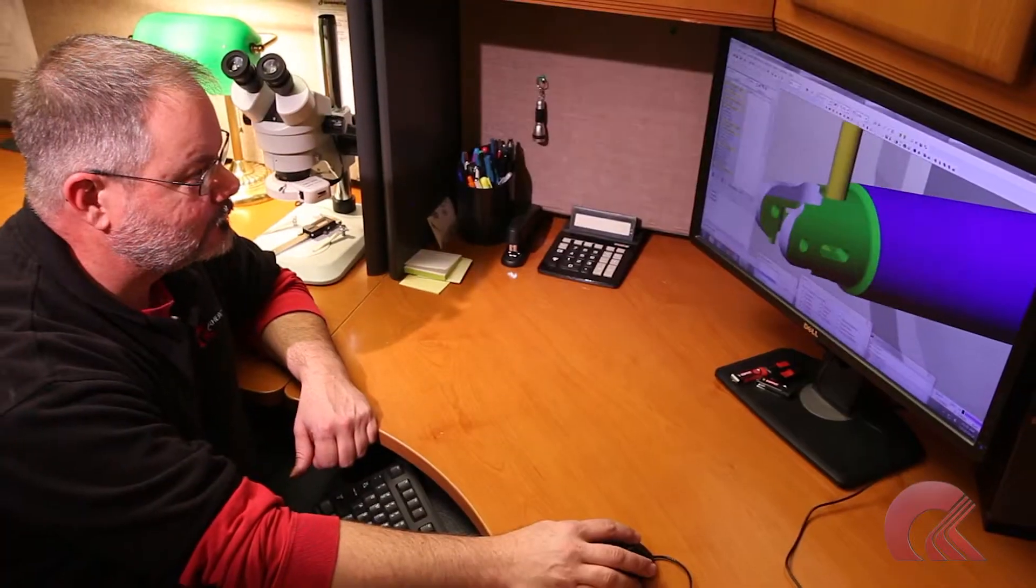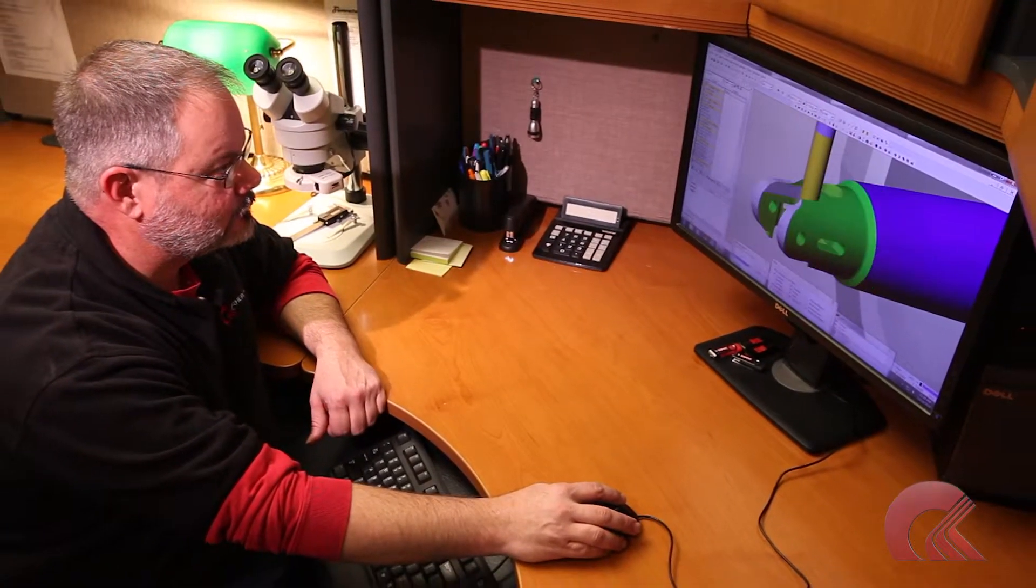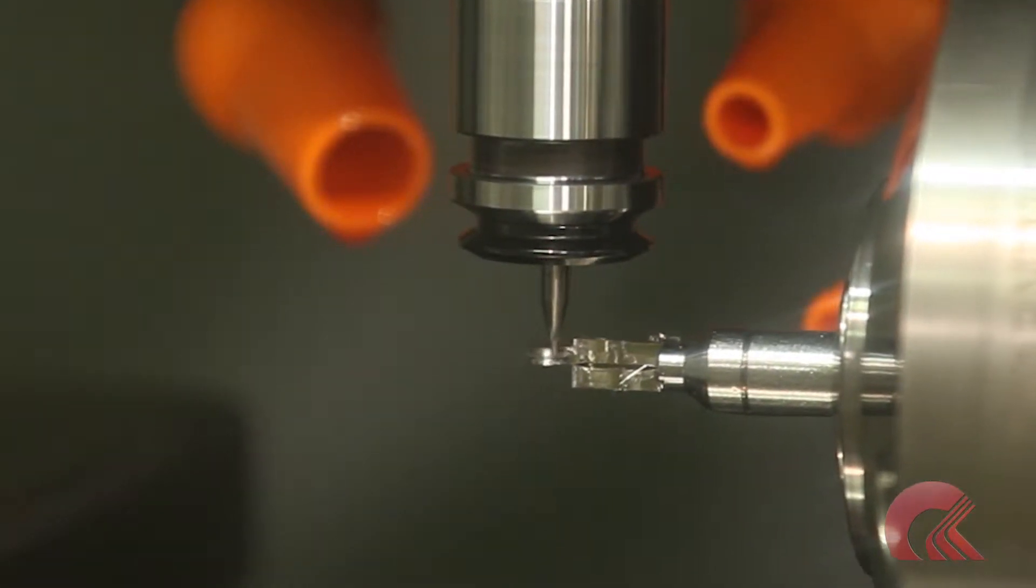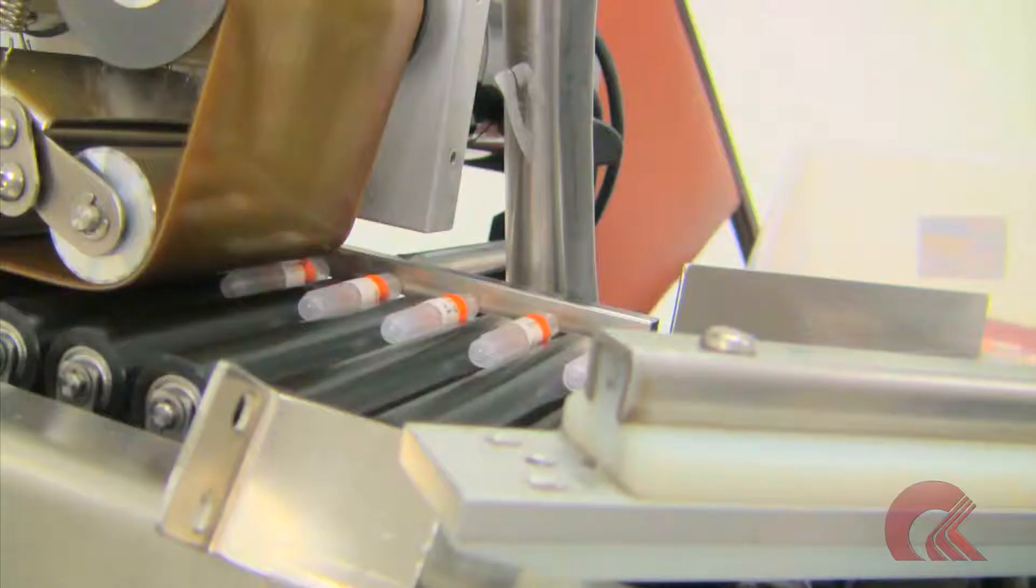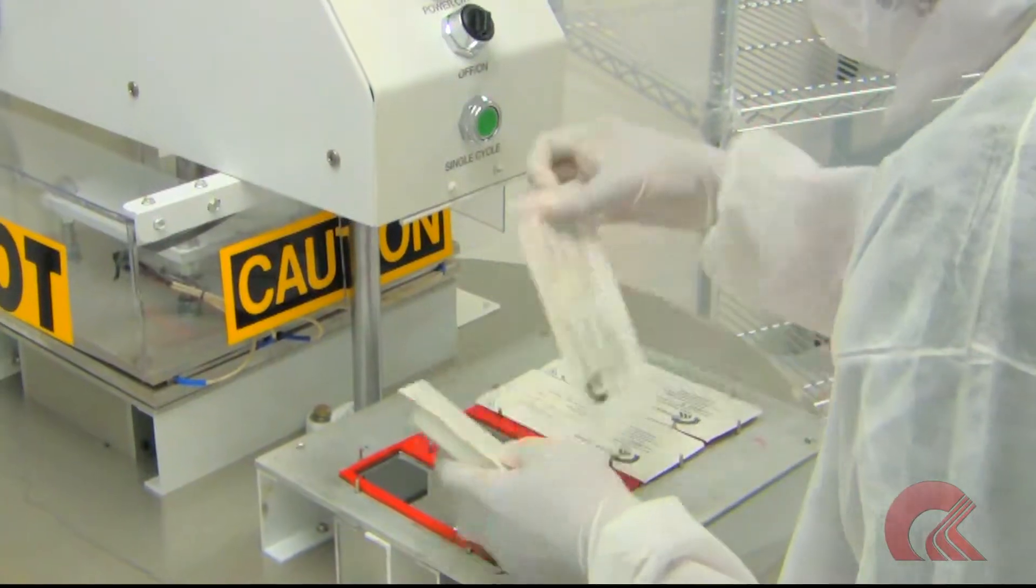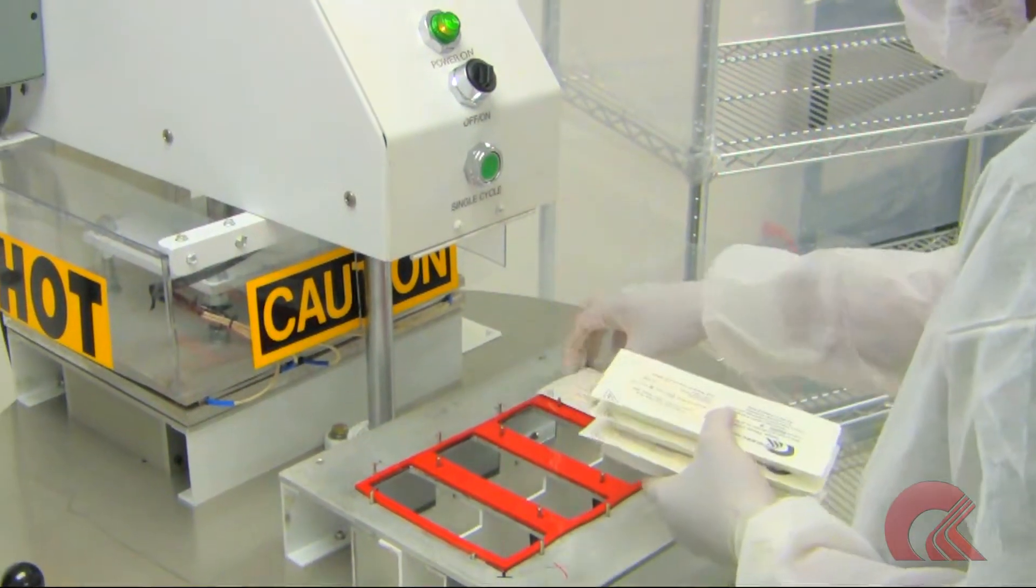The entire process at Rhine Precision, from design, to the selection of raw materials, to the finished product, packaged, sterilized, and ready to ship, is all included in the fulfillment of every order.